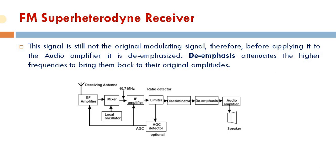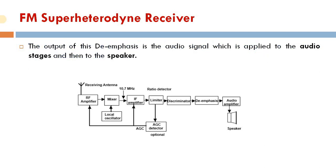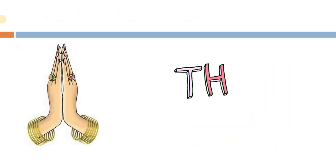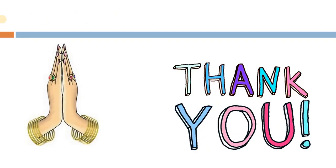A de-emphasis network attenuates the higher frequencies to bring them back to their original amplitudes. The output of this de-emphasis is the audio signal, which is applied to the audio stages and then to the speaker. Thank you.